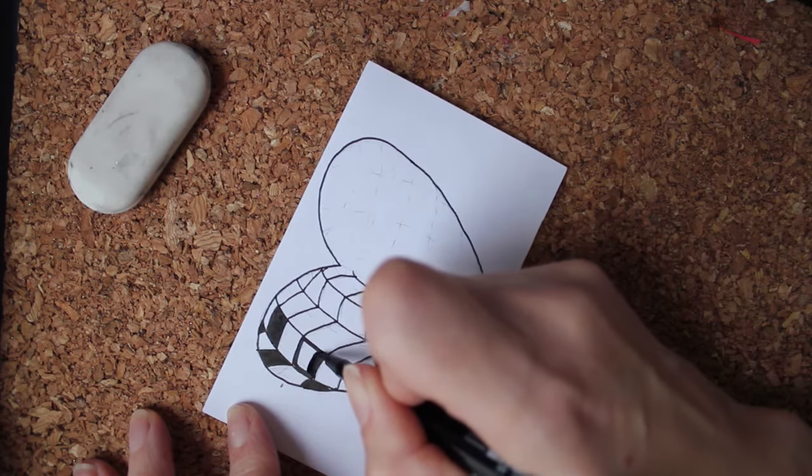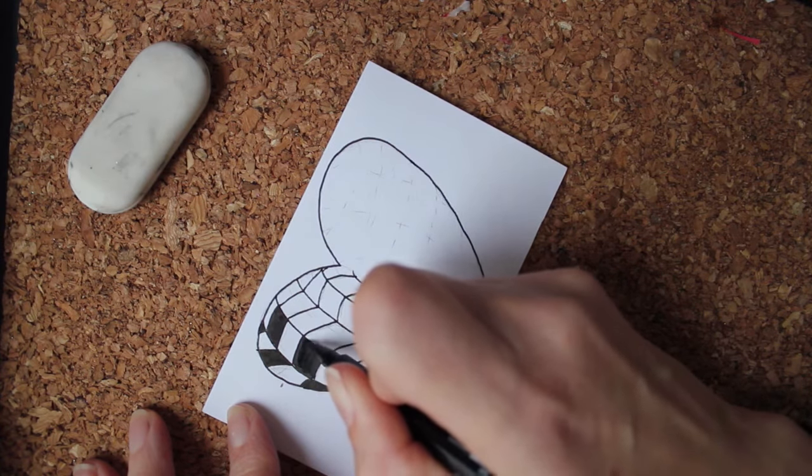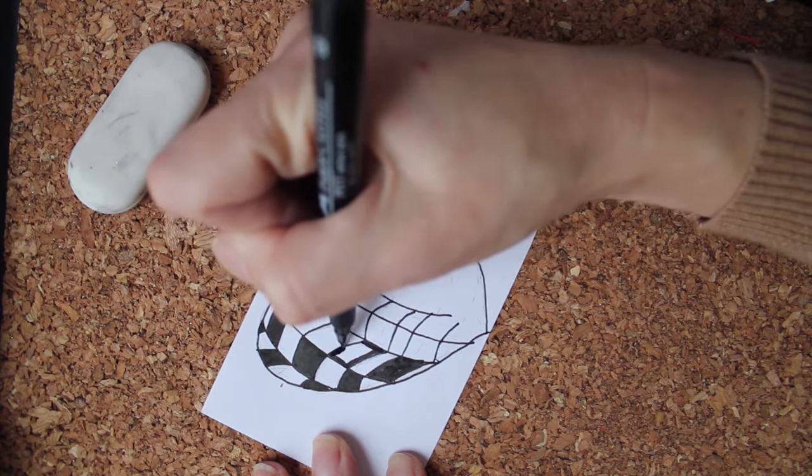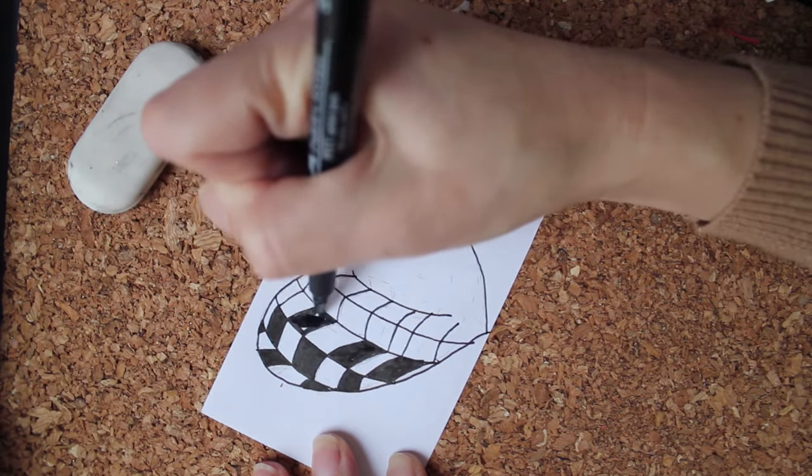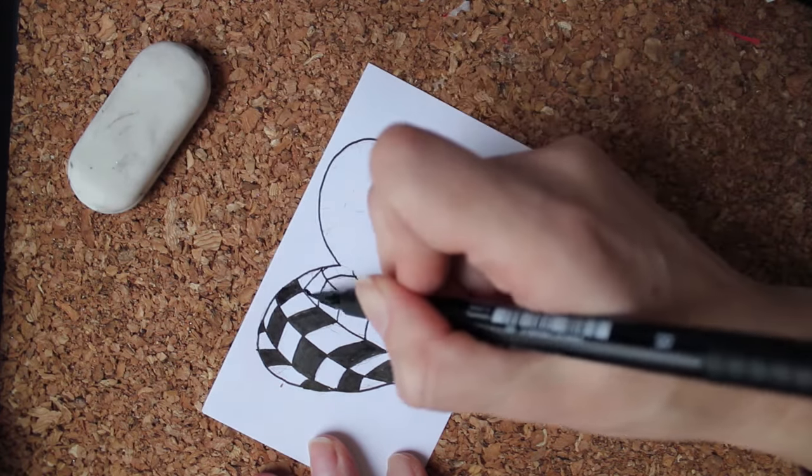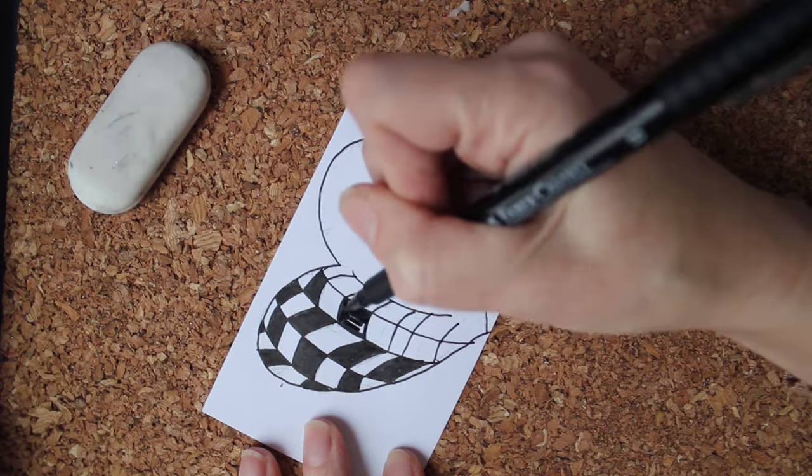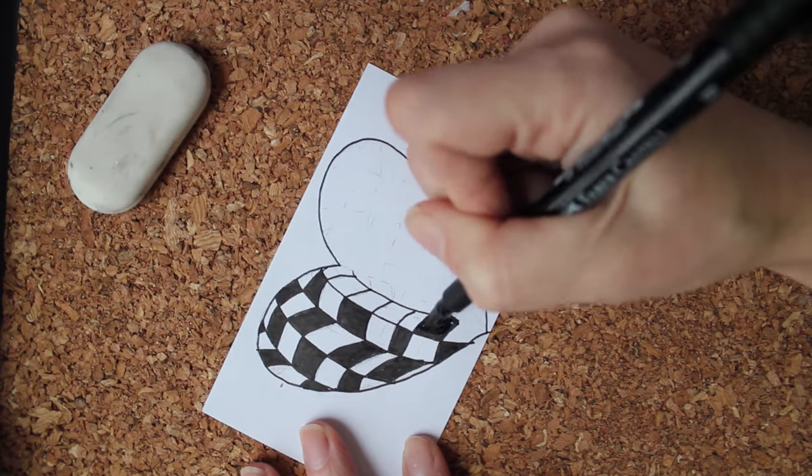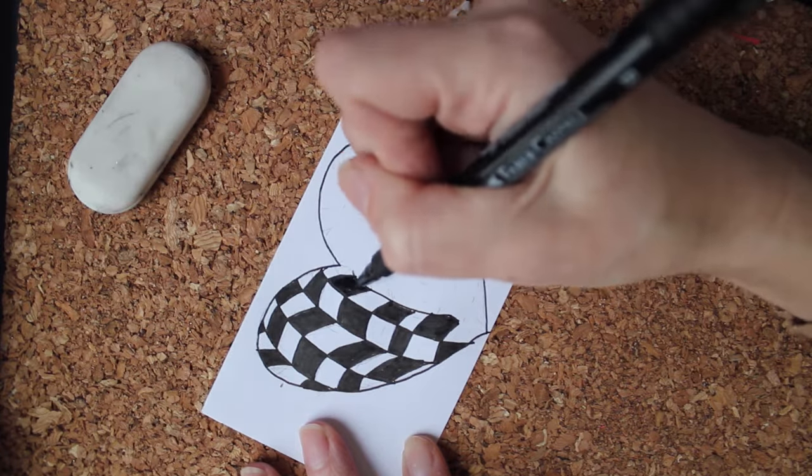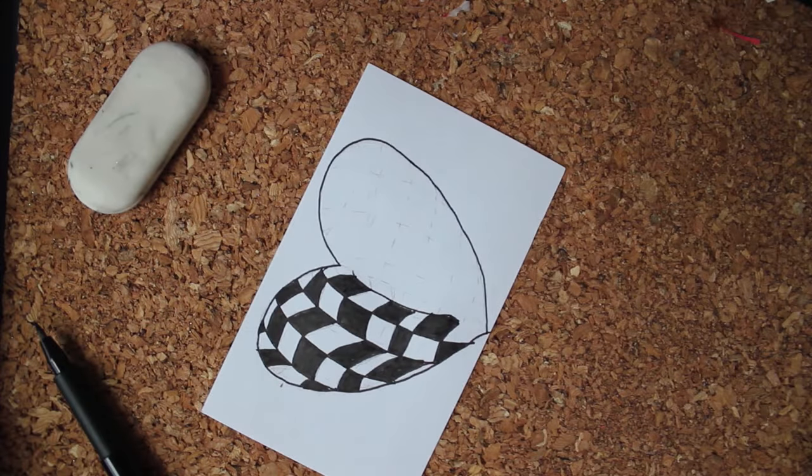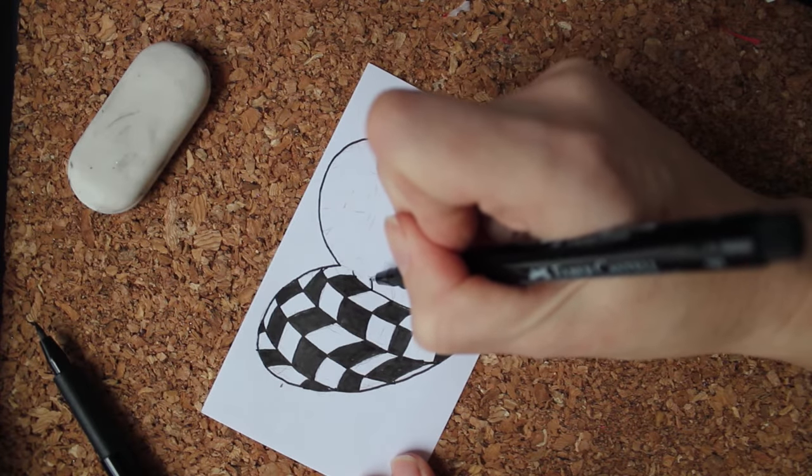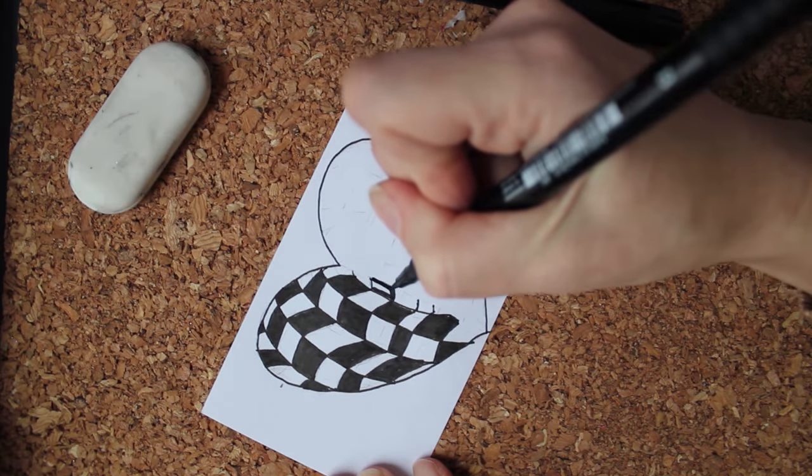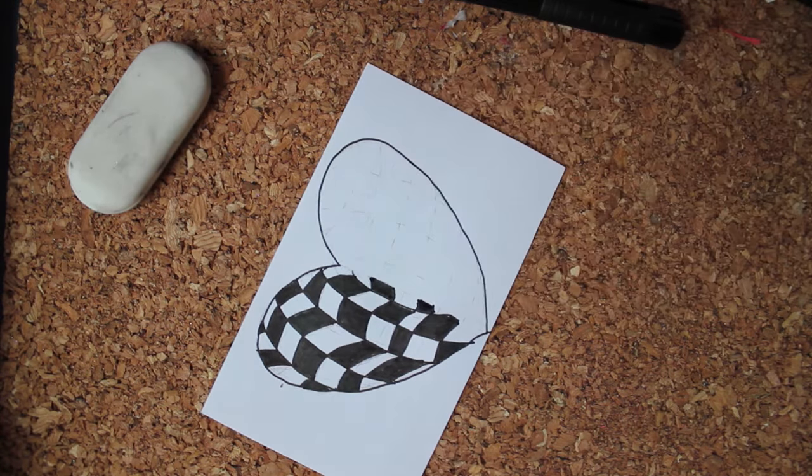As you can see, I outline the square first and then I color it in. That just, to me, helps me stay within the lines. I just realized I missed the inside of here. Alright, so that's my one side of my heart.